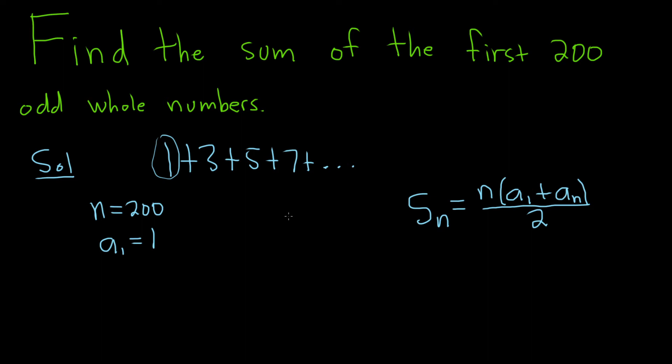So the nth term is 200, so there's a couple ways to do it. You can reason it, which we'll try to do in a minute, or you can use a formula. So the formula for the nth term of an arithmetic sequence is a sub n equals a sub 1 plus n minus 1 times d, where d is what's called the common difference. So here, d is the number you add over and over again. So in this case, it's pretty easy to see that d is 2.